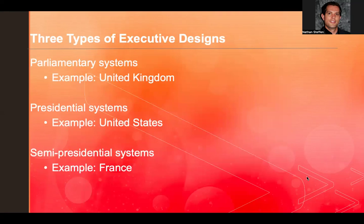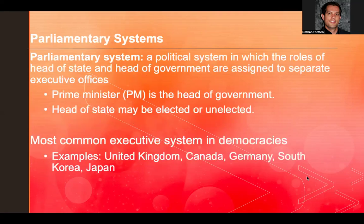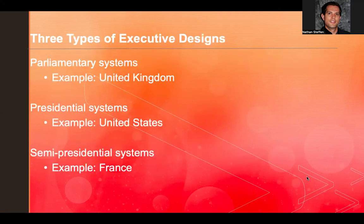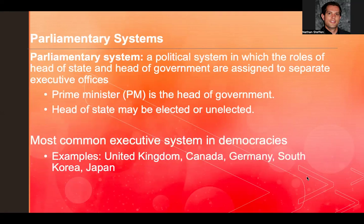Now, the most common executive systems in democracies are parliamentary systems. Examples include the UK, Canada, Germany, South Korea, and Japan. We also have the presidential system, such as in the United States, and a semi-presidential system, with France as our example. Before diving into parliamentary systems in detail, this is a good stopping point. Please stay tuned for Part 2 of the lecture.